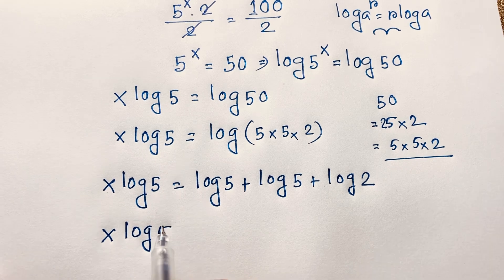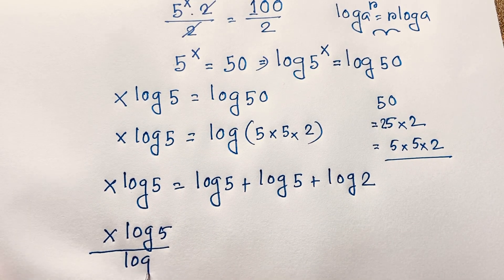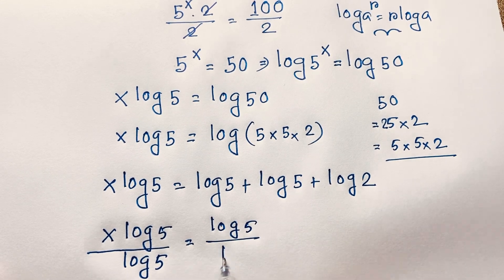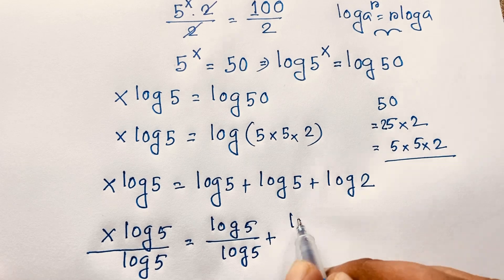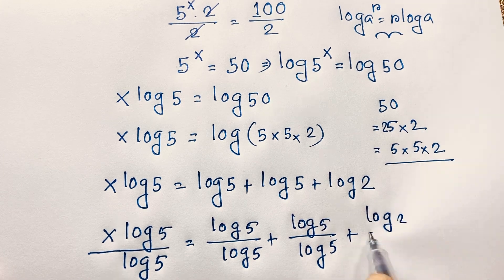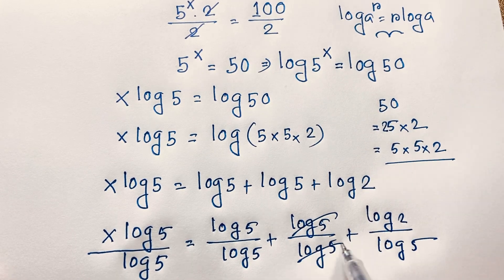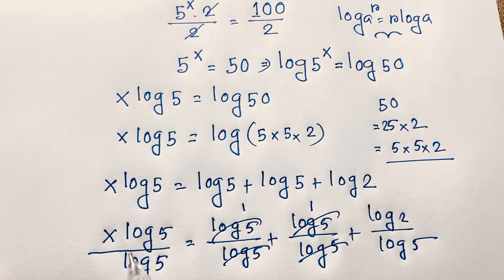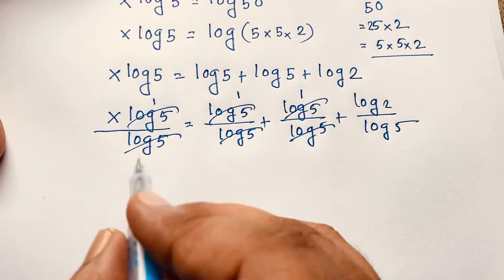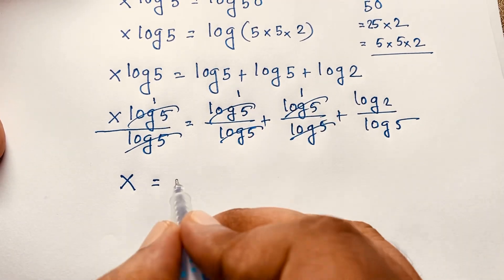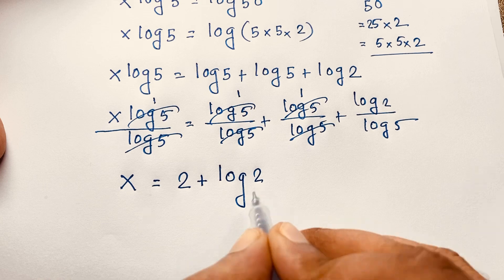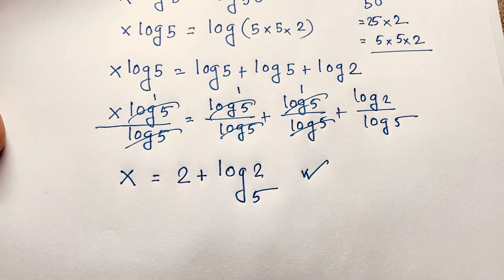Now I divide both sides by log 5. On the left side, log 5 over log 5 cancels to 1, giving x. On the right side, we get log 5 squared over log 5 plus log 2 over log 5, which simplifies to 2 plus log 2 base 5. So x equals 2 plus log base 5 of 2 — this is our final answer.